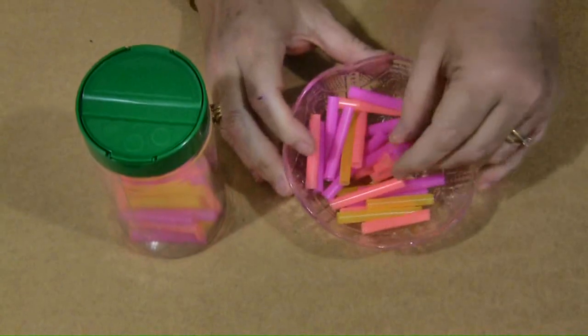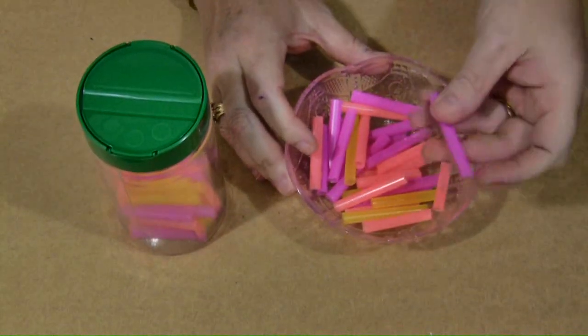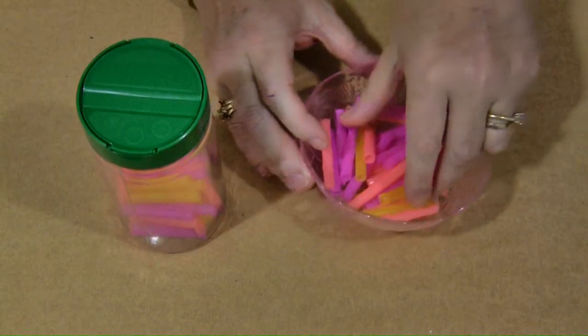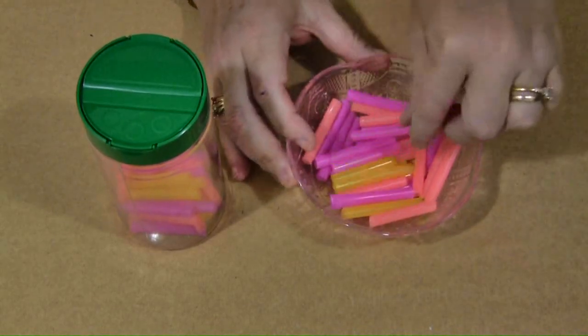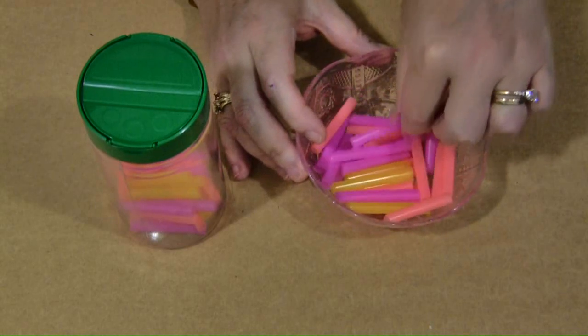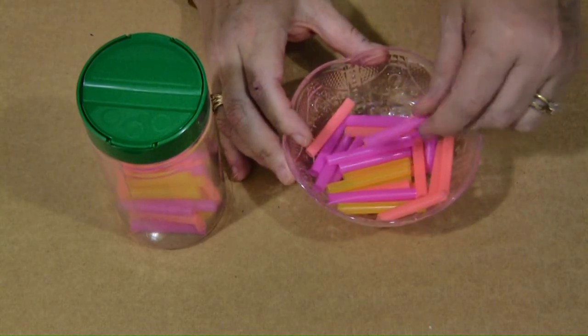All you need to have are straws that have been cut up into smaller pieces, maybe one to two inches in size. We do this for our sensory tub. We put a whole bunch of just whole straws into our tub and then cut them up into pieces so they get a little bit of scissor skill going along with that as well.